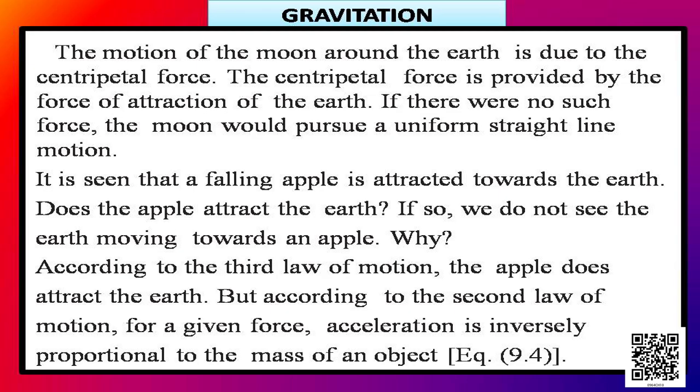The motion of the moon around the earth is due to the centripetal force. The centripetal force is provided by the force of attraction of the earth. If there were no such force, the moon would pursue a uniform straight line motion — the moon would have been somewhere else. But as earth never lets it go away, it pulls the moon towards itself. That is the centripetal force of the earth that pulls the moon, and it acts towards the earth. By this force, the moon is forced to move round and round in uniform circular motion.